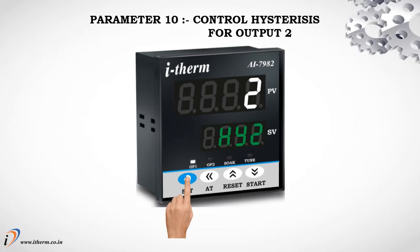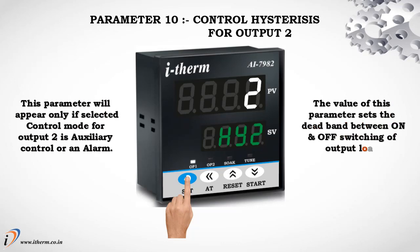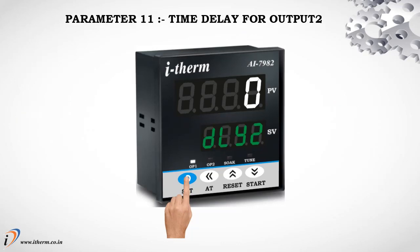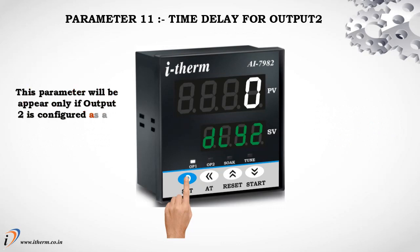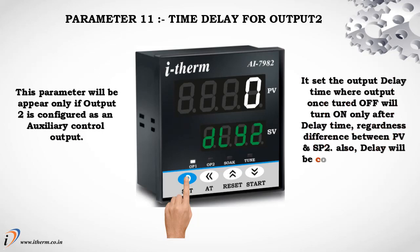Parameter 10: Control hysteresis for output 2. This parameter will appear only if the selected control mode for output 2 is auxiliary control or an alarm. The value of this parameter sets the dead band between on and off switching of the output load. Parameter 11: Time delay for output 2. This parameter will appear only if output 2 is configured as an auxiliary control output. It sets the output delay time where output, once turned off, will turn on only after the delay time, regardless of the difference between process value and set point 2. Delay will also be considered at every power on.